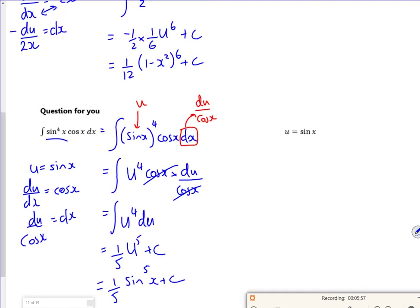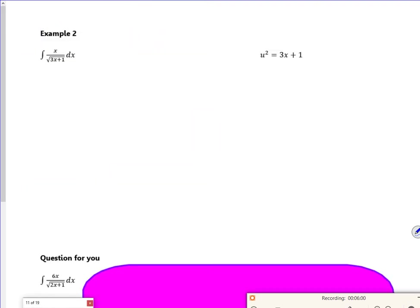Sine. So it becomes 1/5, sine to the power 5 times, plus c. There we go. That's the one for u. Hopefully that's alright.